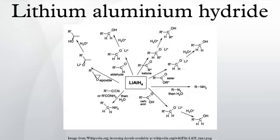Lithium-aluminium hydride, commonly abbreviated to LAH, is an inorganic compound with the chemical formula LiAlH4. It was discovered by Van Holt, Bond and Schlesinger in 1947. This compound is used as a reducing agent in organic synthesis, especially for the reduction of esters, carboxylic acids, and amides.